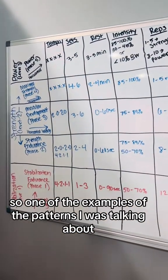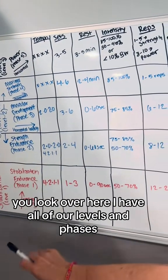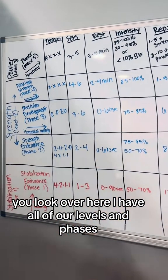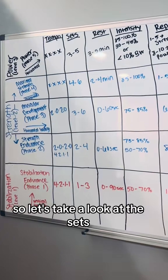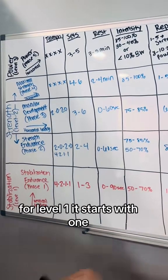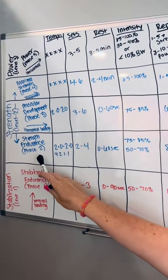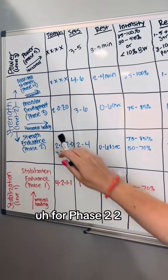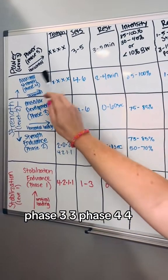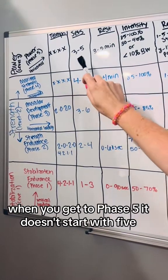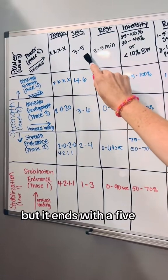One example of the patterns I was talking about - if you look here I have all our levels and phases. Let's look at the sets. For level 1, it starts with 1. Phase 2: 2. Phase 3: 3. Phase 4: 4. When you get to phase 5, it doesn't start with 5, but it ends with a 5.